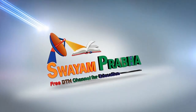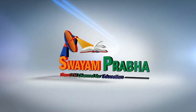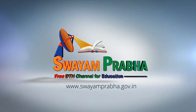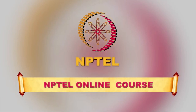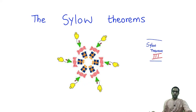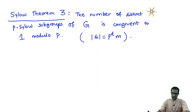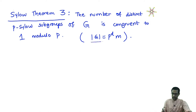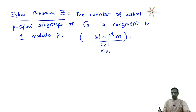Swayam Prabha. Digital India. Educated India. Let us prove the Third Sylow theorem. This is the last of the Sylow theorems, part 3. It says the number of distinct P-Sylow subgroups of a finite group G is congruent to 1 modulo P. The notation is as before: P divides the cardinality of G, we write |G| = P^d · m, where d ≥ 1 and m is relatively prime to P.